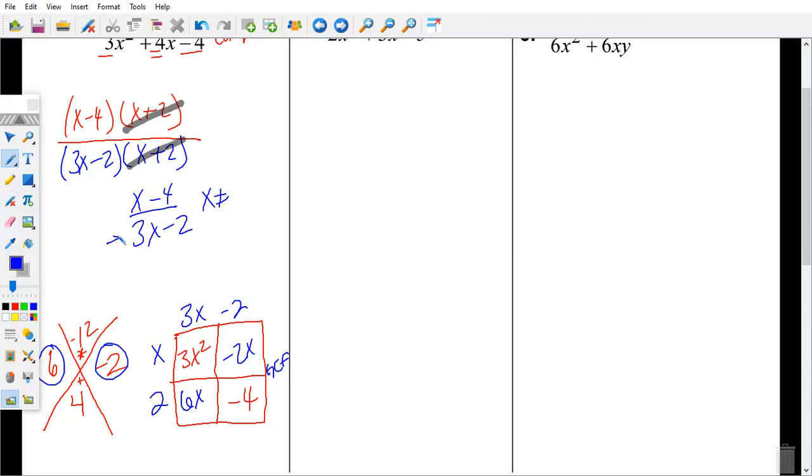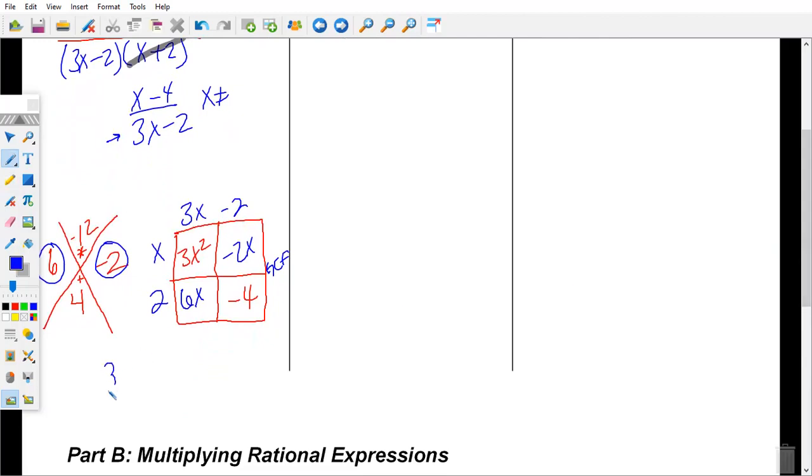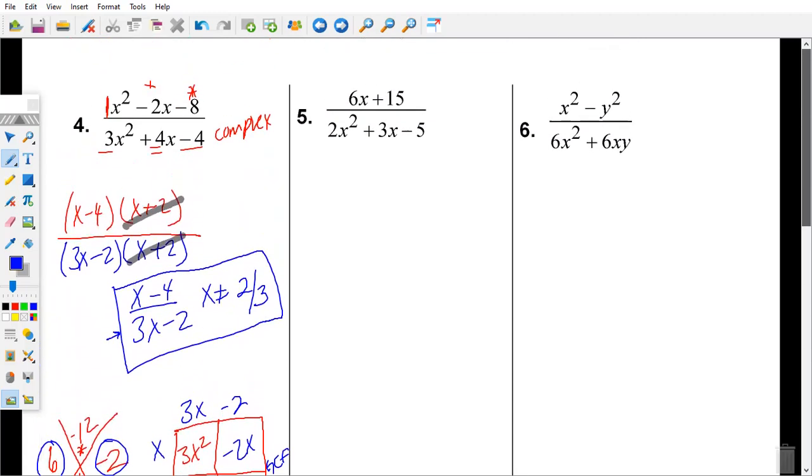So we're left with X minus four over three X minus two. What is our restriction? What can X not equal? Your restriction is based off of your denominator. What would make my denominator equal to zero is what you're asking. I heard two thirds. Yes. So if I have three X minus two equal to zero, I would add two. And I'm left with three X equals two. Is X by itself? No. So I would have to divide by three. So my restriction is two thirds. So that would be my final answer. X minus four over three X minus two. And the restriction is X cannot equal two over three.